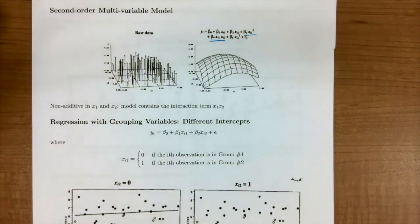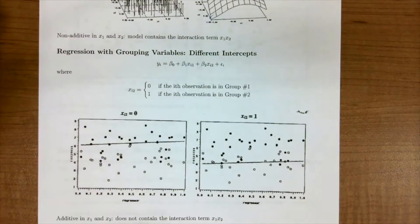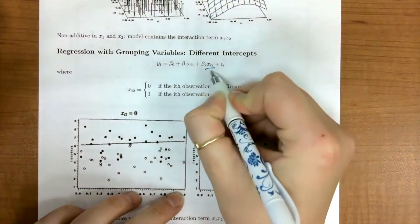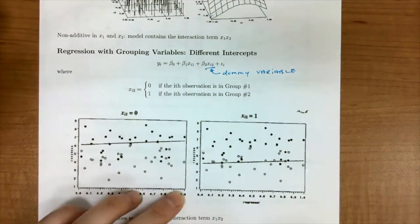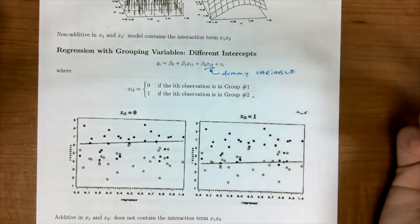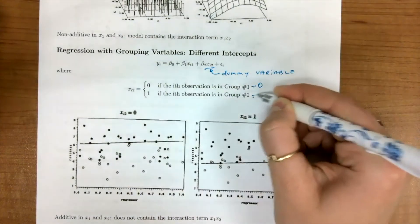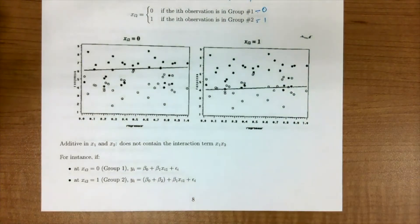So the next case I want to look over is regression with a grouping variable, where we're going to first talk about if the groups have different slopes. So in this scenario, our x2 is considered what we call a dummy variable. And this is going to tell us if this i-th observation is in group 1 or group 2, or to fit with our picture, group 0, group 1. Labels are very arbitrary anyway.